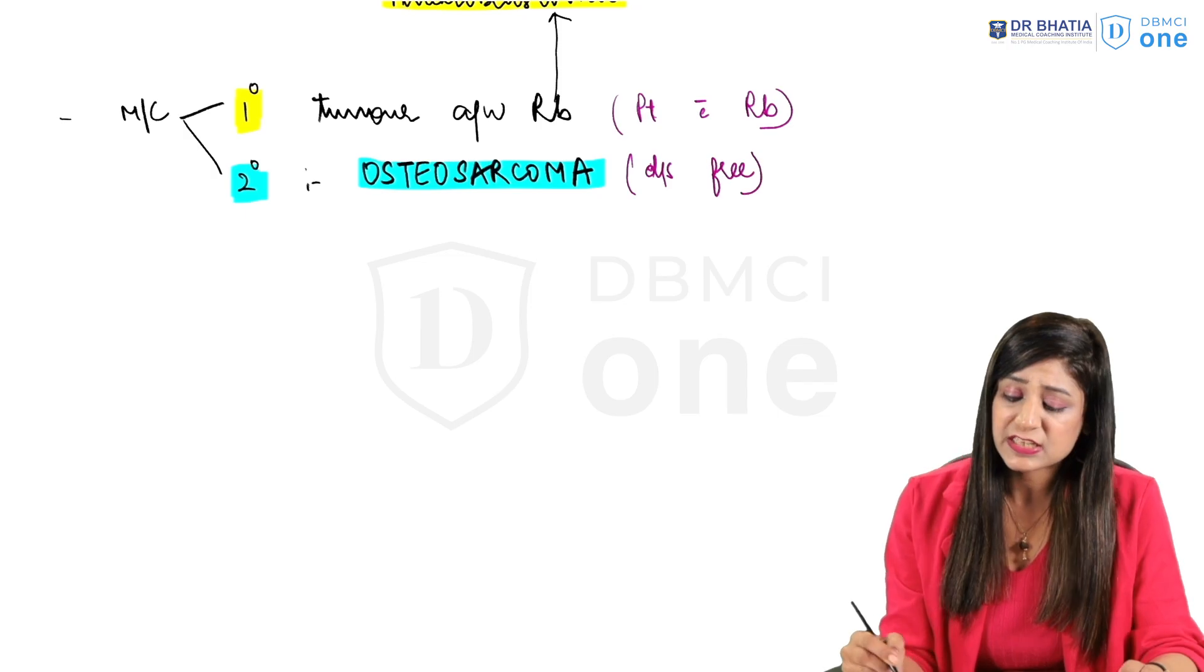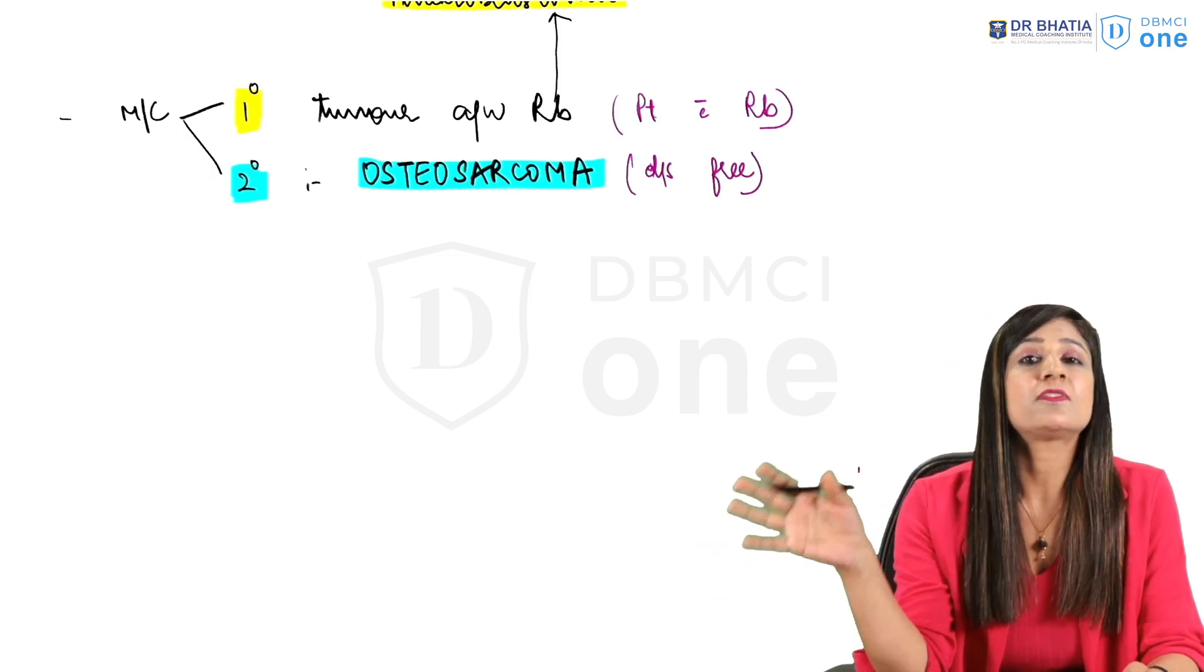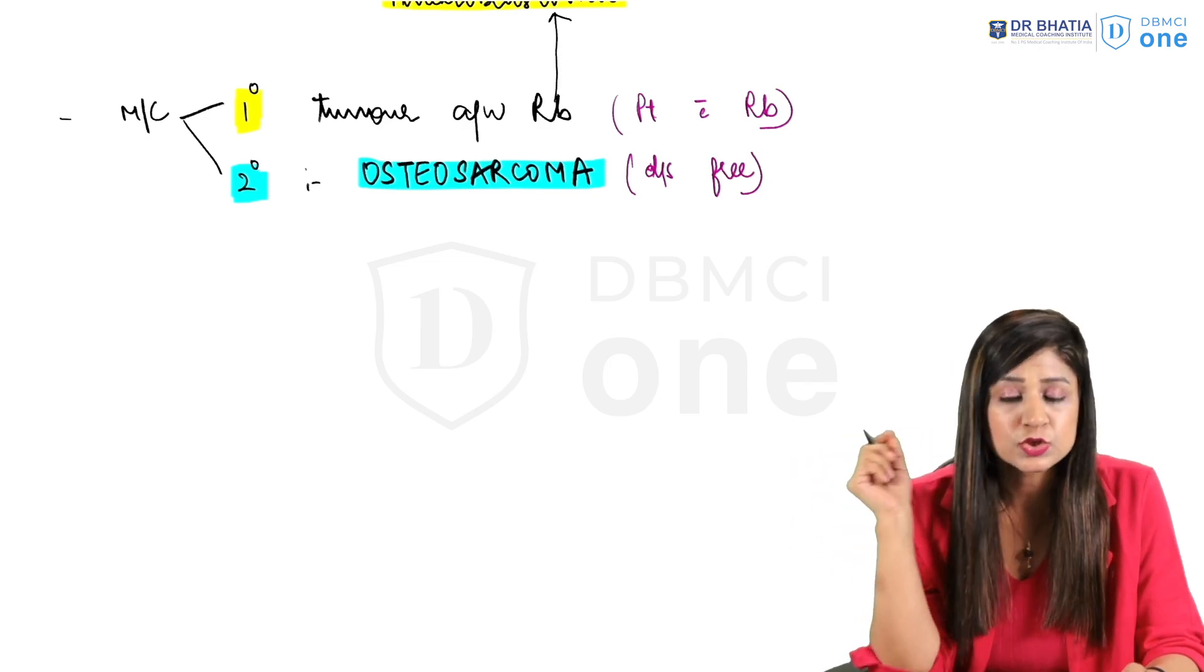And the patient who is disease free, the patient who is disease free is not having retinoblastoma now—what is the most common tumor which can occur in this patient? That is osteosarcoma. So don't get confused between the two.